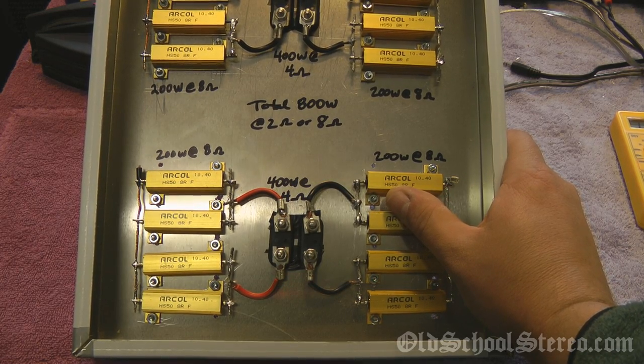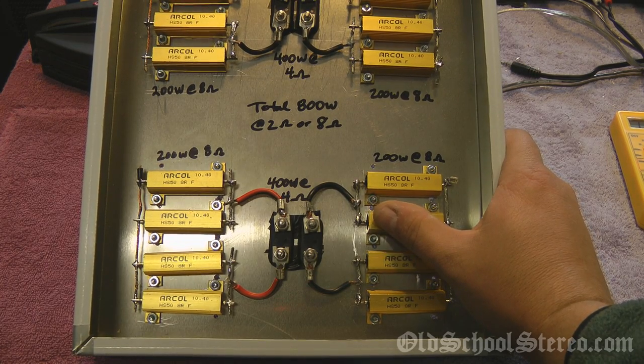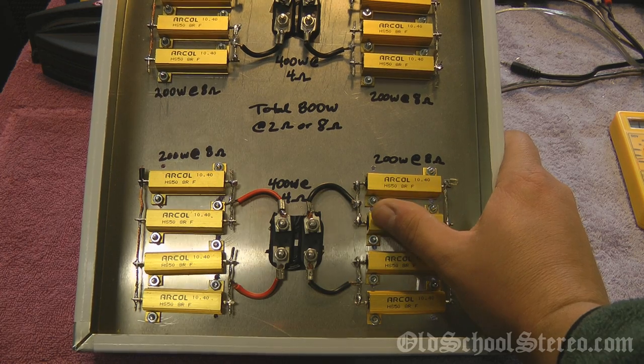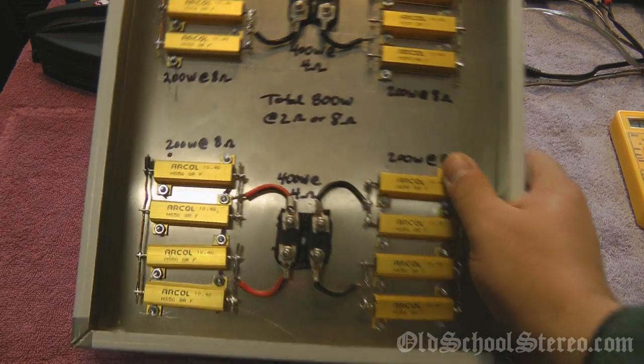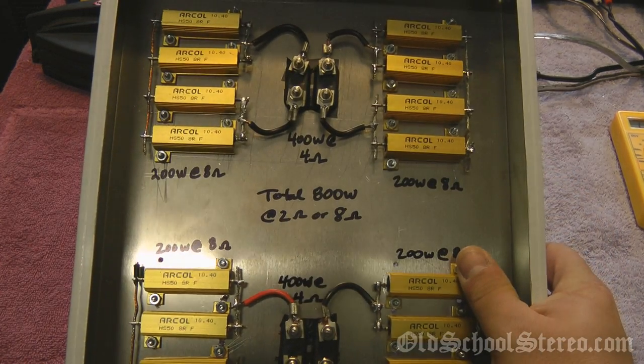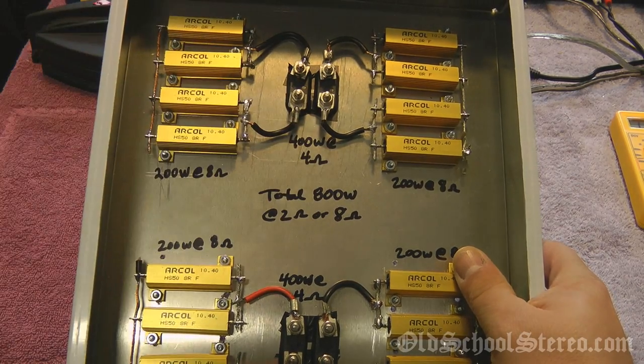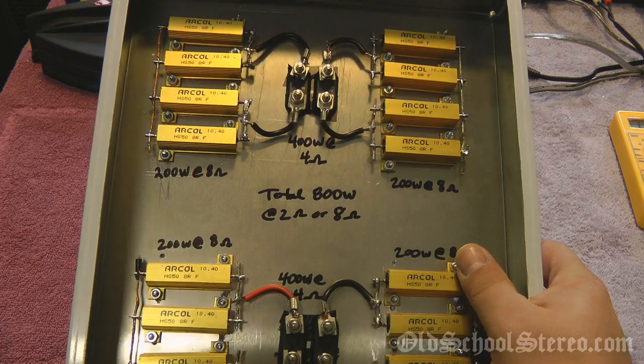Now, for car stereo testing, I bridge two of the 8 ohm loads into 4 ohm loads, that gives me 400 watts at 4 ohms, and then when I want to do two ohm load testings, I can actually parallel the two loads together and give me 800 watts at 2 ohms.